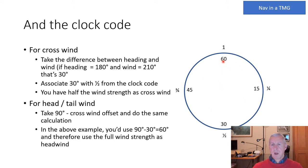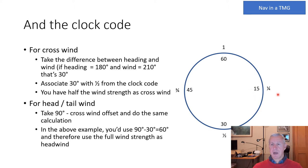Imagine a clock with positions at 15, 30, 45 and 60 minutes — representing a quarter, half, three-quarters and the whole hour. If the angle between our heading and the wind is 15 degrees, use a quarter of the drift. At 30 degrees, use half the drift. At 45 degrees, use three-quarters. At 60 degrees or more, use all the drift.